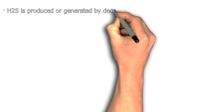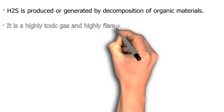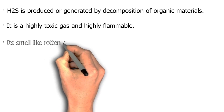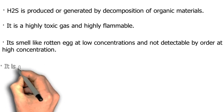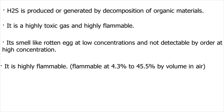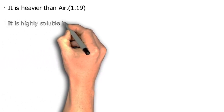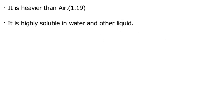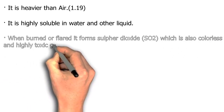Explain H2S. H2S is produced or generated by decomposition of organic materials. It is a highly toxic and highly flammable gas. It smells like rotten egg at low concentrations and is not detectable by odor at high concentrations. It is flammable at 4.3% to 45.5% by volume in air. It is colorless and heavier than air with a specific gravity of 1.19. It is highly soluble in water and other liquids. When burned or flared it forms sulfur dioxide (SO2), which is also colorless and highly toxic.